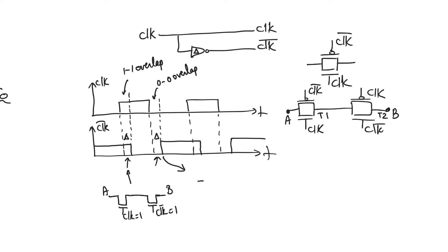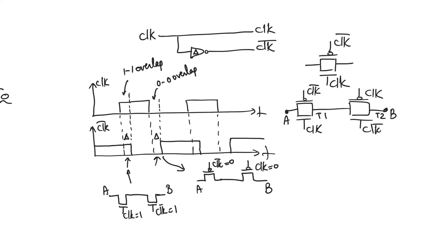Also, during the 0-0 overlap, there is a path through the PMOS of the first transistor because clock bar equals 0, and a path through the second transmission gate through the PMOS because clock also equals 0. So what is causing the problem is that clock and clock bar, for a period of time, refuse to be logic complements of each other because of delay in the inverter.